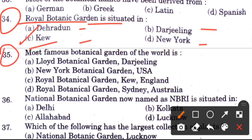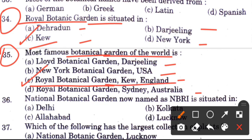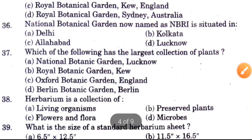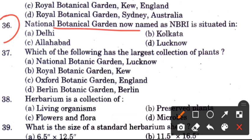Question 35: The most famous botanical garden of the world — options are Lloyd Botanical Garden Darjeeling, New York Botanical Garden USA, Royal Botanical Garden Kew England, or Royal Botanical Garden Sydney Australia. The answer is C, Royal Botanical Garden, Kew, England. Question 36: The National Botanical Garden now named NBRI is situated in — options are Delhi, Kolkata, Allahabad, or Lucknow. The answer is D, Lucknow.